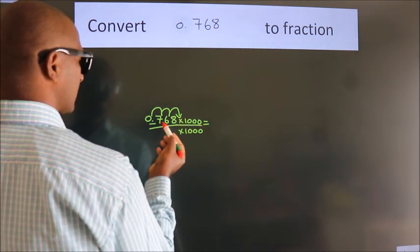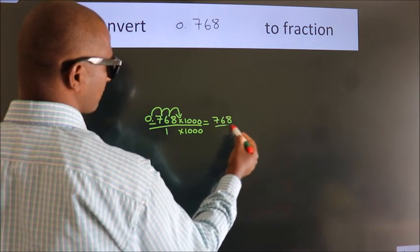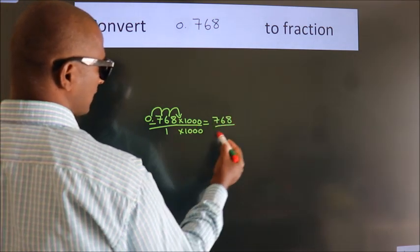0.768 into 1000 is 768. 1 into 1000 is 1000.